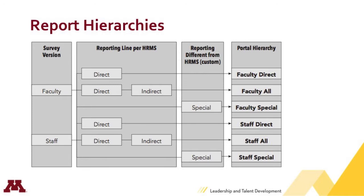We then have the same structure for staff results. There's a staff-direct hierarchy, which includes only direct reports to a particular manager. There's staff-all, which includes all staff direct and indirect reports that roll up to a manager. And finally, staff-special reports, which includes any staff shadow hierarchy reports requested by your unit. Note that you'll only have access to the hierarchies that are applicable for you.